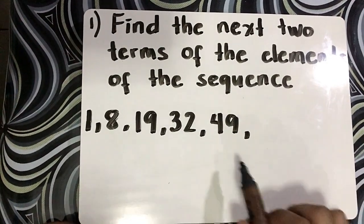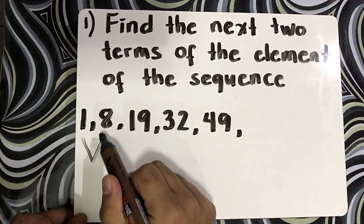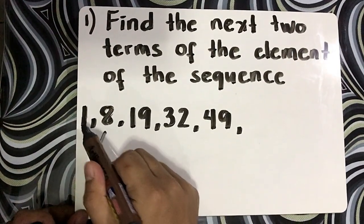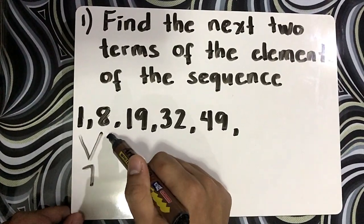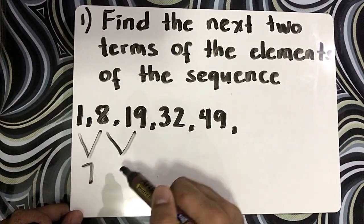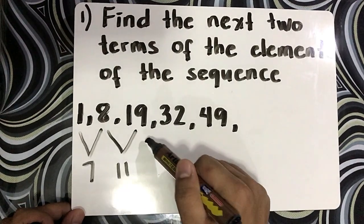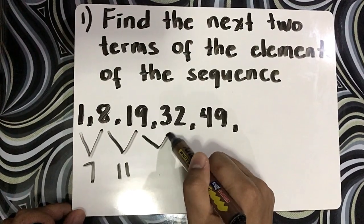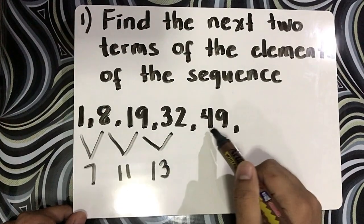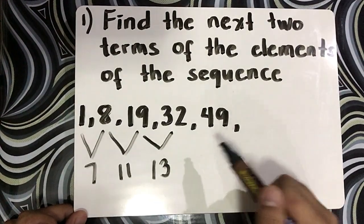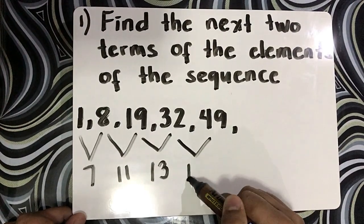Study the sequence and get the common difference. So we have: 8 minus 1 is 7; 19 minus 8 is 11; 32 minus 19 is 13; 49 minus 32 gives you 17.